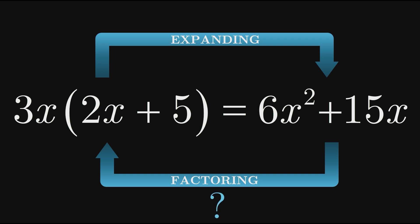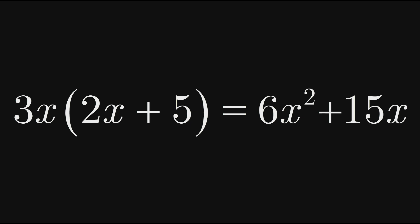But how could we get from the expanded expression on the right to the factored expression on the left here? The key is to notice that in our expanded expression on the right, the coefficients 6 and 15 are both divisible by 3. Specifically, 3 is the greatest common factor of 6 and 15, which is why we see a 3 at the beginning of the factored expression.